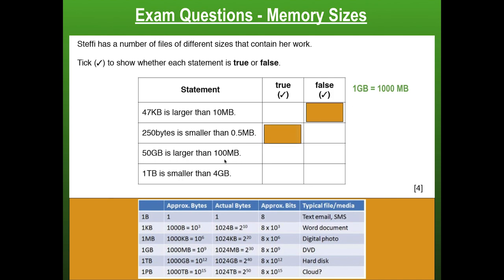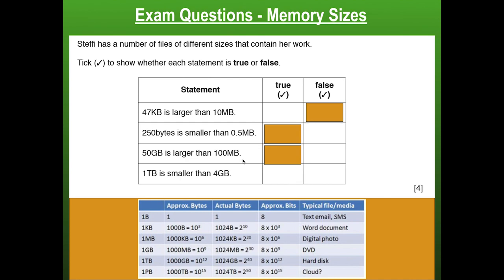Next: 50 gigabytes is larger than 100 megabytes. One gigabyte equals 1,000 megabytes, so 50 gigabytes would be 50,000 megabytes. Is 50,000 megabytes greater than 100 megabytes? Yes — true. Last one: one terabyte is smaller than four gigabytes. One terabyte equals 1,000 gigabytes, so four gigabytes is definitely smaller than 1,000 gigabytes. Is one terabyte smaller than four gigabytes? Absolutely not — false. A couple of quick calculations and you can easily pick up four marks.